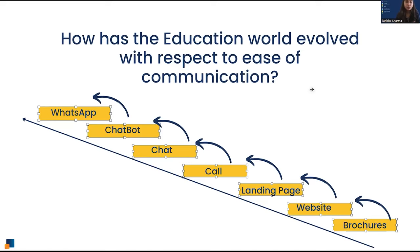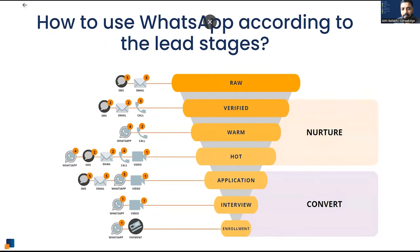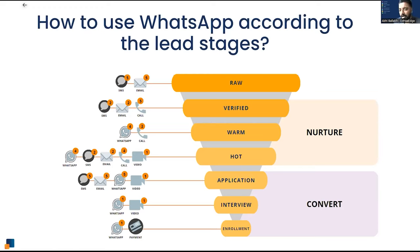Now that we know WhatsApp is preferred by Gen Z, how should marketers target according to funnel stage? One size fits all does not work. You need to understand your funnel: at the top are raw or cold contacts, then warm contacts who've replied to you, then hot prospects who've shown commercial interest, then applications, and finally interviews, walk-ins, or demo classes leading to enrollment and payment.